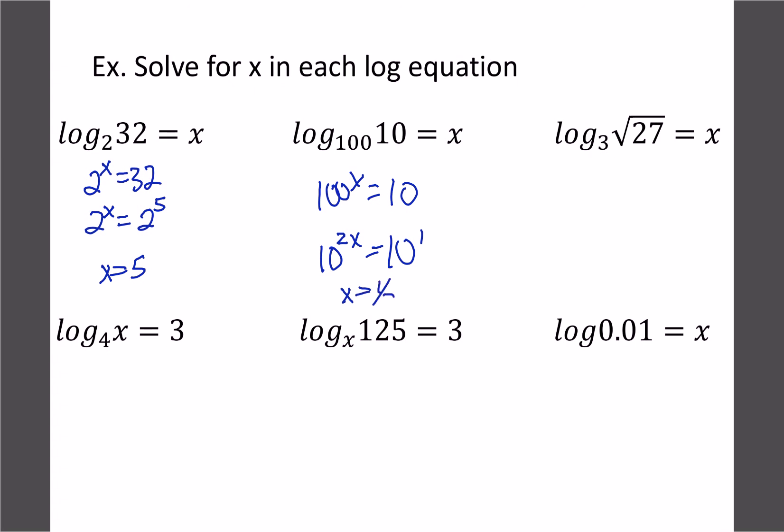The next one we'd have 3 to the x equals root 27. Change those to the same base, so 27 would be 3 cubed, so the root would just be square root which is a half, so x would equal 3 halves. The next one we got 4 to the 3 equals x. Well, 4 to the 3 is 64.